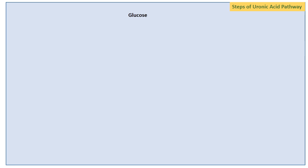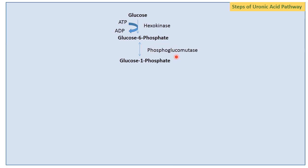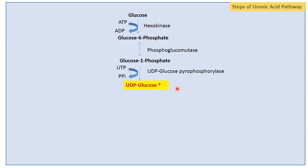The steps of the Uronic Acid Pathway begin with glucose being phosphorylated to glucose-6-phosphate, catalyzed by hexokinase. This glucose-6-phosphate is isomerized to glucose-1-phosphate by the enzyme phosphoglucomutase. Glucose-1-phosphate is then converted to UDP glucose, requiring the high-energy molecule UTP, catalyzed by UDP glucose pyrophosphorylase.